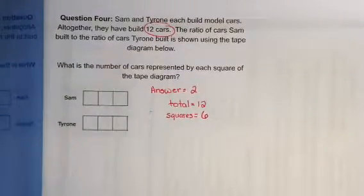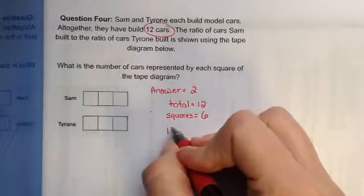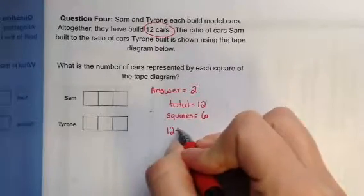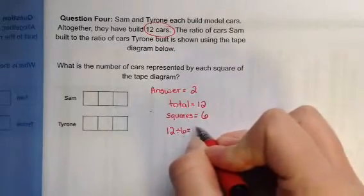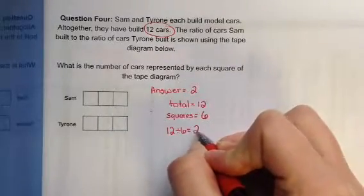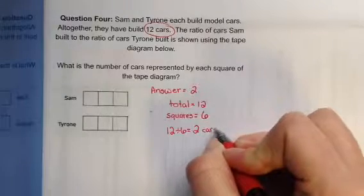So to solve this problem, we're going to divide. The total divided by the number of squares gives us the number of cars per square.